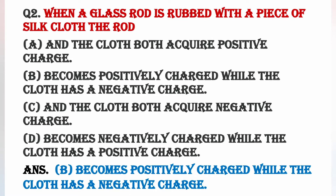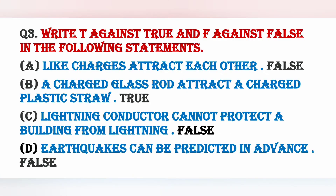Next question: Write T against true and F against false in the following statements. यहाँ कुछ statements दी गई हैं, आपको बताना है कि उनमें से कौन सी true है और कौन सी false है। Statement A: Like charges attract each other — this is false, क्योंकि like charges हमेशा एक दूसरे को repel करते हैं, और always opposite charges attract each other.